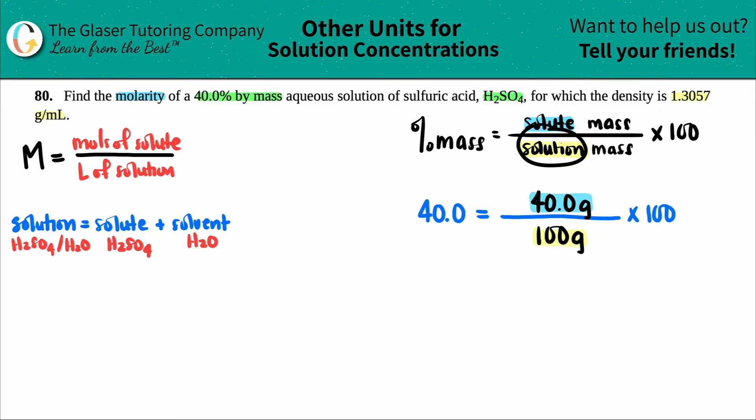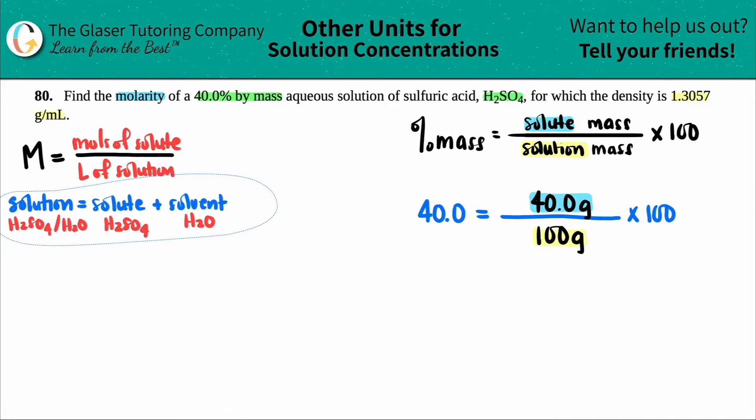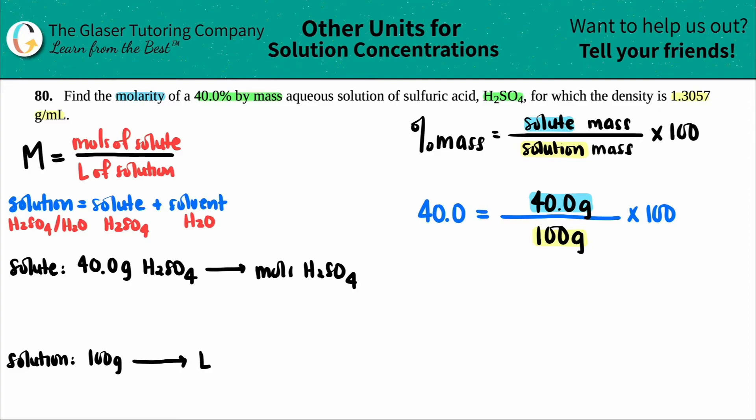I now know that I have 40 grams for the solute and 100 grams for the solution. So for the solute, I have 40.0 grams H2SO4. In the molarity formula, I need it to be moles of the solute. So I have grams right now, so I just have to convert that into moles. For the solution, we're going to start off with 100 grams. I need the liters of the solution. So I have to convert grams into liters.